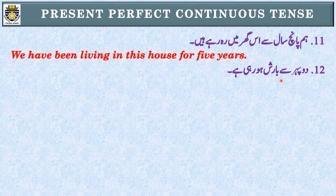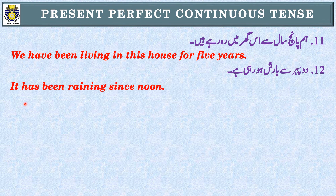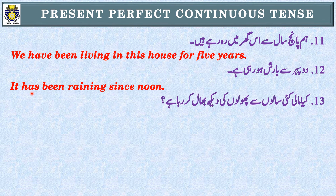Sentence 12: 'دوپہر سے بارش ہو رہی ہے۔' Identification: 'رہی ہے' اور 'دوپہر سے' — Present Perfect Continuous Tense۔ Dear students، یاد رکھیں: موسم اور وقت کے لیے ہم 'it' use کرتے ہیں — یہ introductory word ہے۔ It singular noun ہے، third person singular — has been۔ It has been raining since noon.